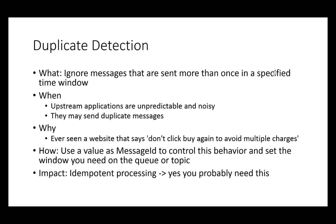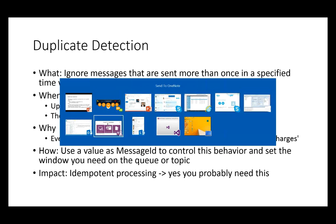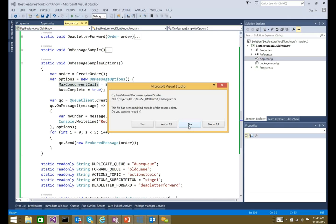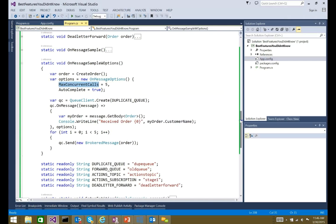When you create a queue or topic, you set this behavior at the queue description or topic description. You can set it through the portal or through code. This is really powerful. When you talk about cloud-scale applications and reliable integrations and eventual consistency models, you always run into the issue of idempotency — you want messages or methods called multiple times to not have negative effects. That's a great theory but tends to be a fairly hard thing to do. This is a very easy way to do it.